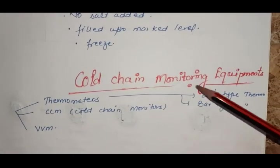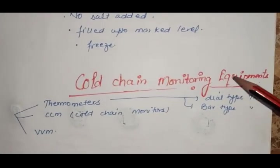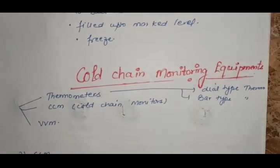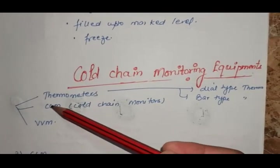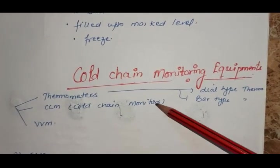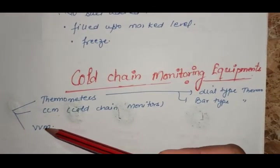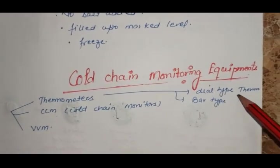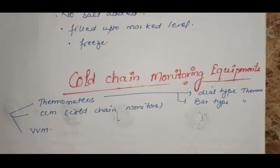Now we will see cold chain monitoring equipment. There are three equipment for checking whether cold chain is maintained: thermometer, CCM that is cold chain monitor, and VVM vaccine vial monitor. Thermometers are of two types: dial type and ball type.